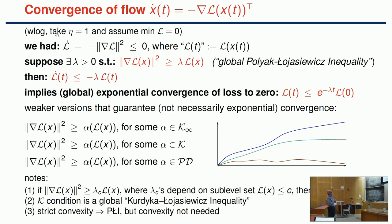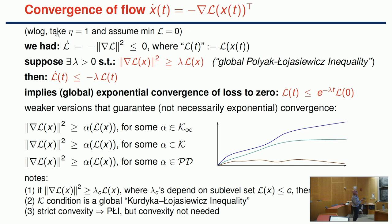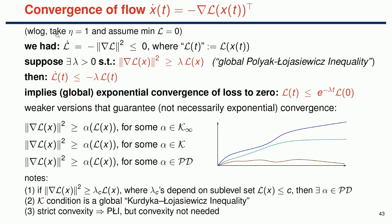Now, many people know about the Polyak-Łojasiewicz (PL) inequality—a gradient dominance condition stating that if the gradient is small, the value of the function should also be small. Precisely: the norm squared of the gradient is greater than or equal to some constant times the value of the function (assuming the minimum is at zero). This is called a global PL inequality because usually PL is only proved in sub-level sets—compact sets. We'll see why that distinction matters.